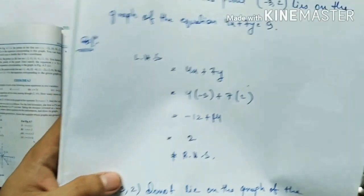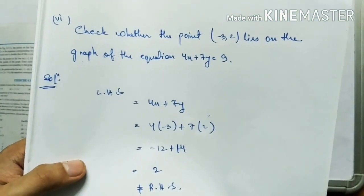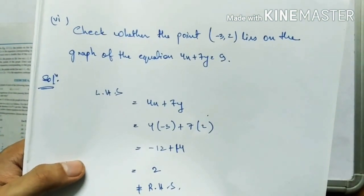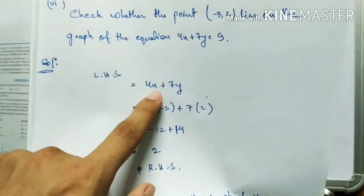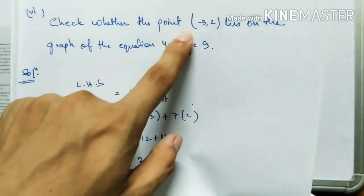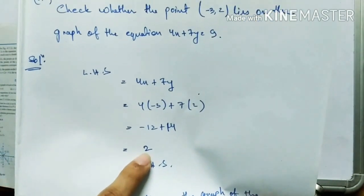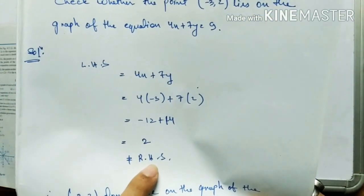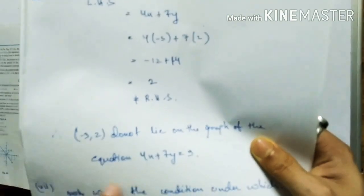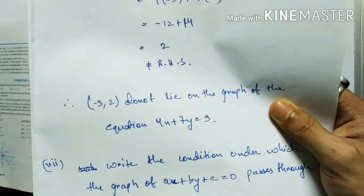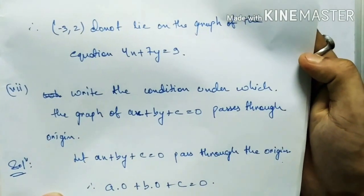Question Number 6: check whether the point lies on the graph of 4x plus 7y equals 9. Take LHS: 4x plus 7y, substitute the x and y values — you get 2, which is not equal to RHS (9). Therefore, this point does not lie on the graph of the equation.